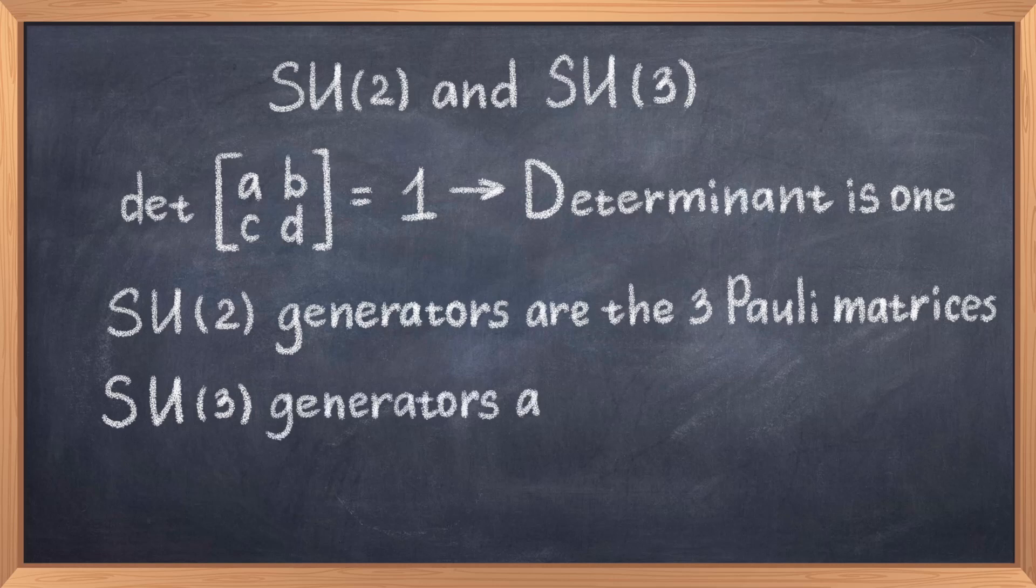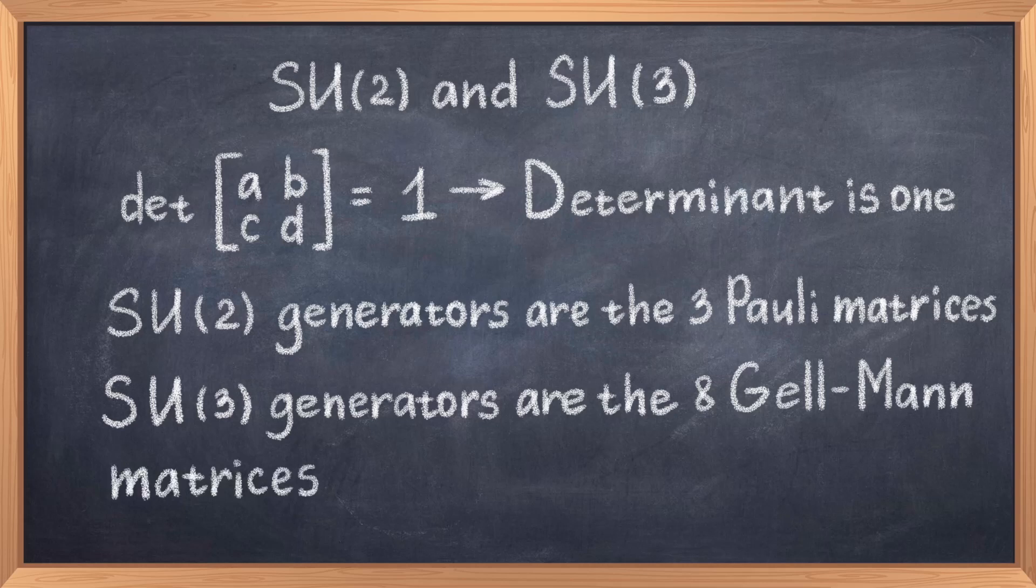We can then consider the even more complicated group named the SU(3) group, which just like the SU(2) group is composed of matrices, but now it is 3x3 complex matrices. Just like before, the condition is that the determinant is 1. This group is represented by the 8 Gell-Mann matrices, thus we have 8 generators for the SU(3) group.